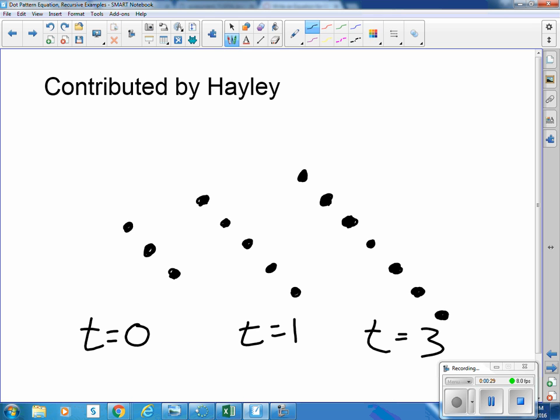That would be one, two, three, four, five, six, seven. You can see that it's just adding on two new dots each time. So I need to come up with an equation that increases by two each time.